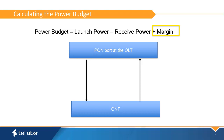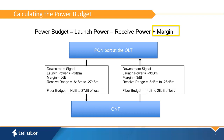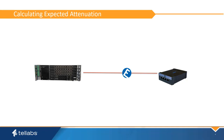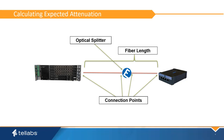Downstream and upstream power budgets are very similar. Because upstream signals are subject to slightly higher attenuation over distance, the received sensitivity limit is expanded to 28 dB of loss. Expected attenuation is the sum of all attenuation created by fiber optic splitters, connection points, and fiber length between the OLT and the ONT. It is used as a benchmark for fiber and PON equipment installation as well as ongoing PON maintenance.